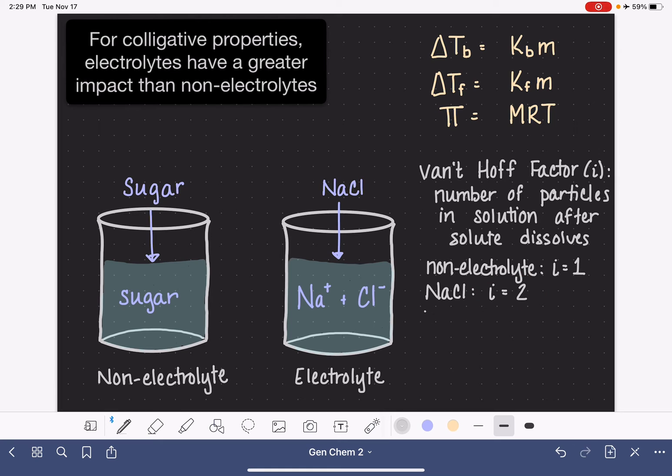Or for something like magnesium chloride, MgCl2. This substance has three particles. It has one magnesium cation and it has two chloride anions for a total of three particles.